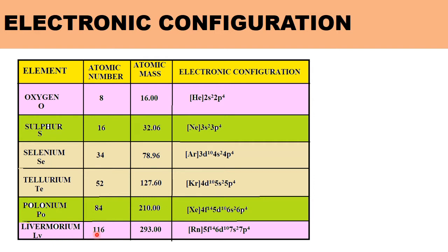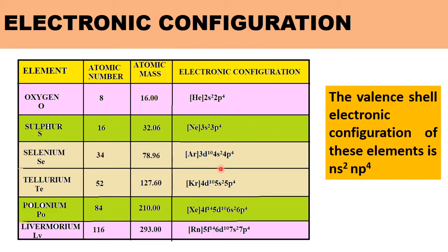The configuration of Livermoreum is [Rn] 5F14 6D10 7S2 7P4. From this electronic configuration, the valence electronic configuration of the members of the Oxygen family is NS2-NP4. There are 2 electrons fewer than needed to complete its octet.